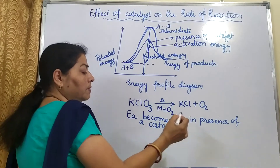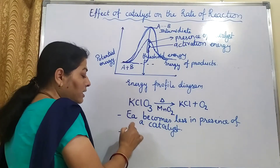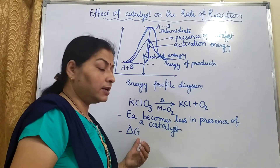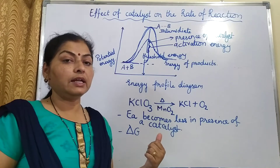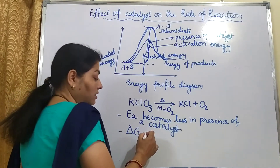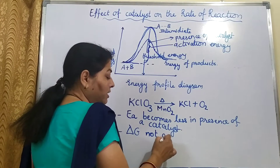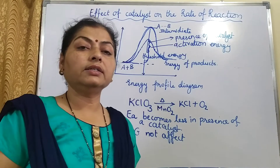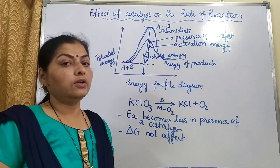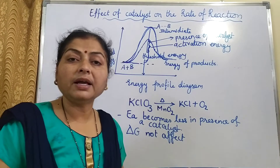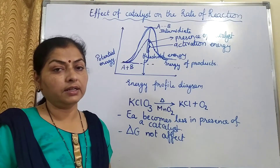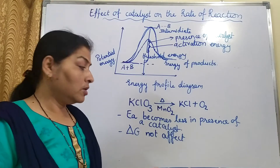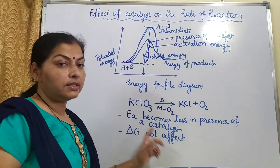Another important thing to remember is delta G, the Gibbs free energy change. Gibbs free energy decides the spontaneity of the reaction. The catalyst will not affect delta G — it is not affected by the presence of a catalyst. This means a spontaneous reaction will remain spontaneous and a non-spontaneous reaction will not become spontaneous in the presence of a catalyst. A catalyst cannot make a non-spontaneous reaction happen; it can only catalyze a spontaneous reaction.